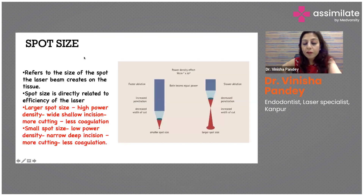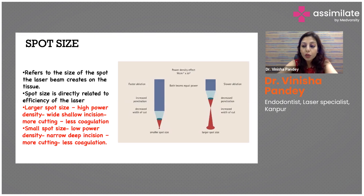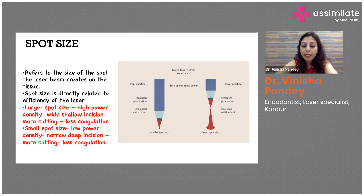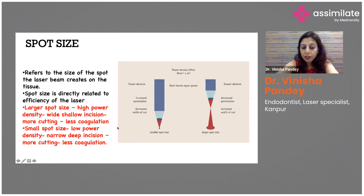Spot size is important because a larger spot size, as in non-contact mode, gives decreased penetration, increased width of cut, and less coagulation. Working with a smaller spot size in contact mode gives decreased width of cut, increased penetration into the epithelial and sub-epithelial layers, more cutting, and less coagulation. You have to manage these parameters based on what you are working on.